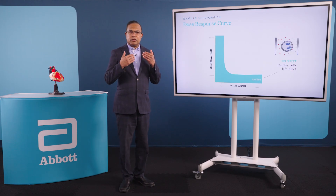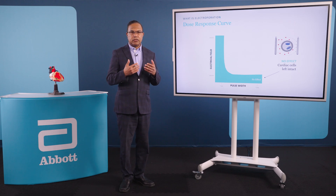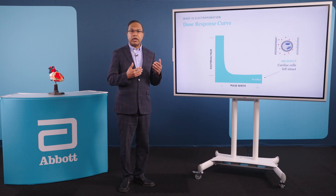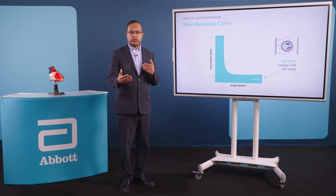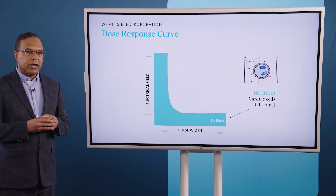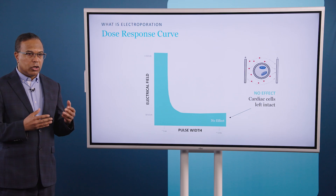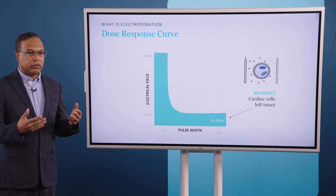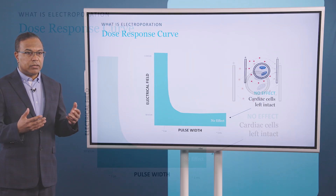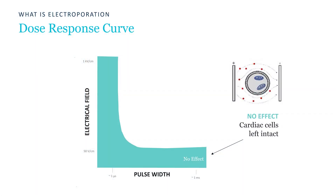Now, the effects that an electrical field will have on the cell depends both on the magnitude of the field, as well as the duration over which that field is applied. If we apply a very small field over a very short period of time, there will be no effect on the cellular function.